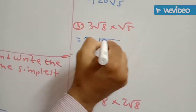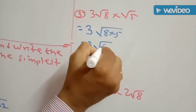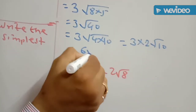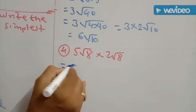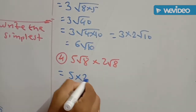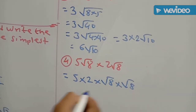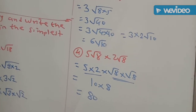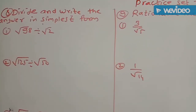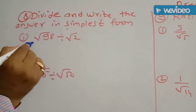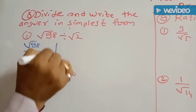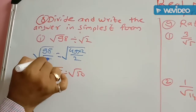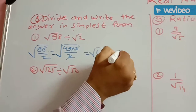Next example: divide and write the answer in simplest form. Root of 98 divided by root of 2. Write as root of 98/2. 98 equals 49 into 2, so root of 49 into 2 upon 2. The 2 gets cancelled, giving root of 49, and square root of 49 is 7. Second: root of 125 divided by root of 50. Factorize: 125 equals 25 into 5, and 50 equals 25 into 2. The 25 gets cancelled, giving root of 5 upon root of 2, which is root of 5/2.